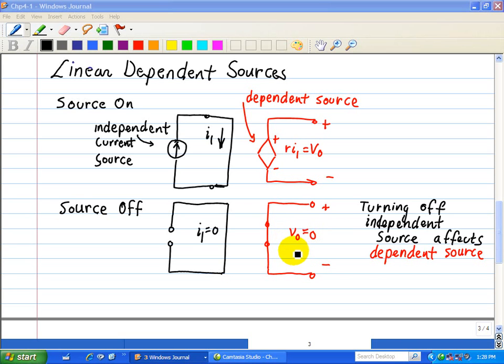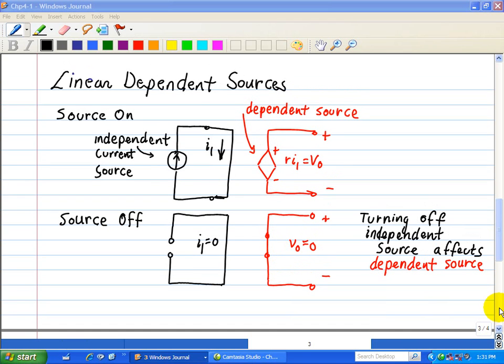When the independent current source is off, the dependent voltage source acts as a short circuit. The bottom line is that turning off independent sources affects dependent sources, as illustrated.